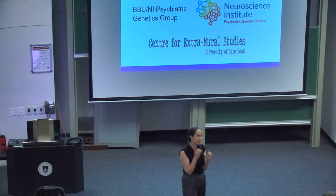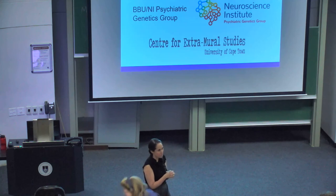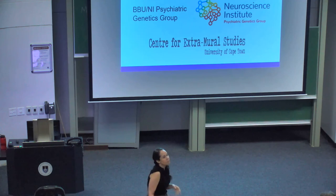Schizophrenia is probably the furthest along of the PGC disorder groups. Whereas the PGC-PTSD group has published one 20,000-participant study, schizophrenia has published about three iterations at much larger sample sizes. In the most recent schizophrenia Manhattan plot, countless dots exceed the genome-wide significance threshold. Schizophrenia was initially prioritized about 20 years ago because of its high heritability — around 80% — versus something like PTSD at 22–30%.